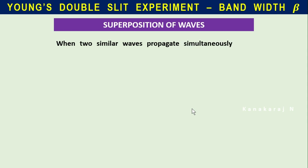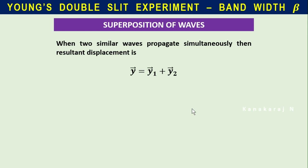Superposition of waves. When two similar waves propagate simultaneously, the resultant displacement is given by the formula y⃗ = y⃗₁ + y⃗₂. Here we are going to treat the light wave as a mechanical wave. Only then can we explain the double slit experiment — we are not using electromagnetic waves in explaining this double slit experiment.